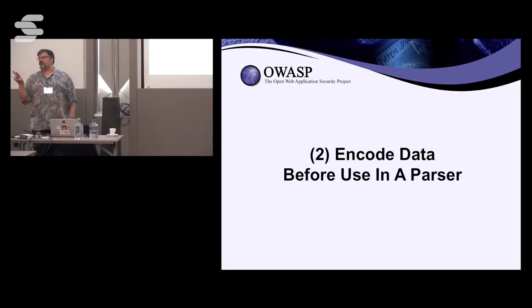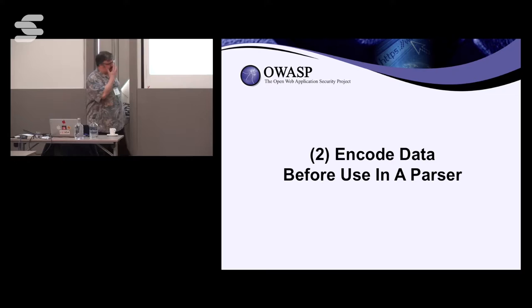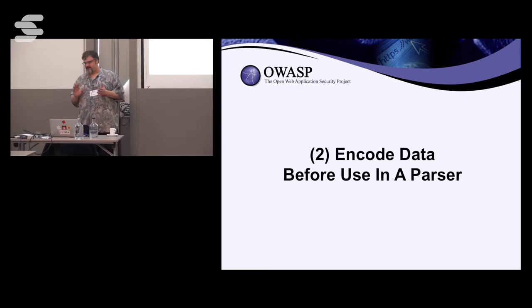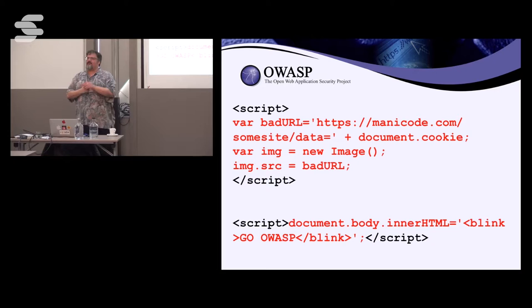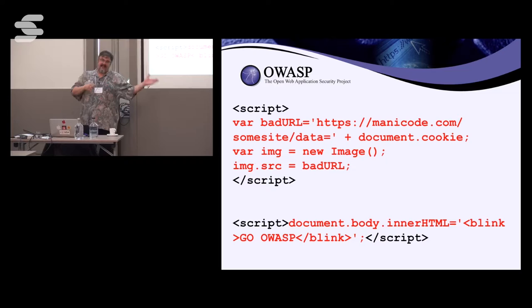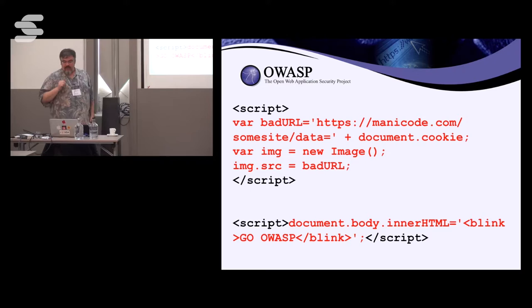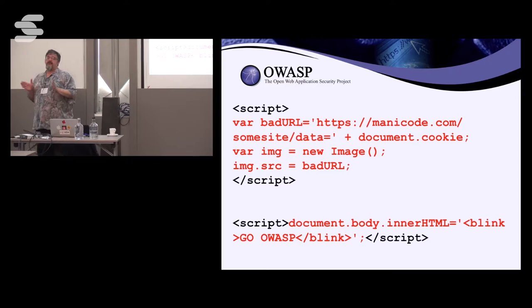Secure coding technique number two is encoding. The whole point of encoding is to take data, escape it or encode it to a different form that's not going to be executable while still preserving that original content. The main attack that needs good encoding is cross-site scripting — a common JavaScript injection attack. The attacker logs into your web application, updates their profile, dumps JavaScript into their profile, then emails the administrator saying 'my profile's not working, can you look at it?' The admin looks at your profile and the JavaScript executes.